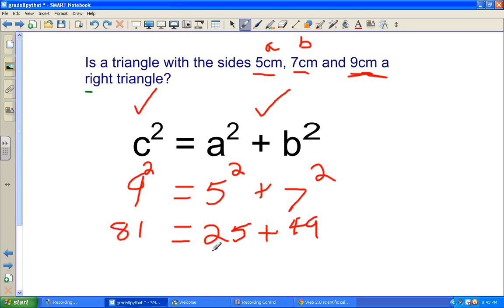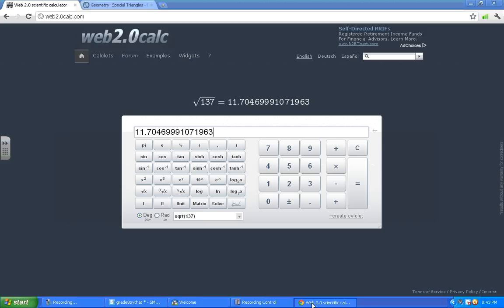The only thing we have left to do is add this up and see if it will equal 81 centimeters. So 81 centimeters. Add up 25 plus 49. And our answer is 74.